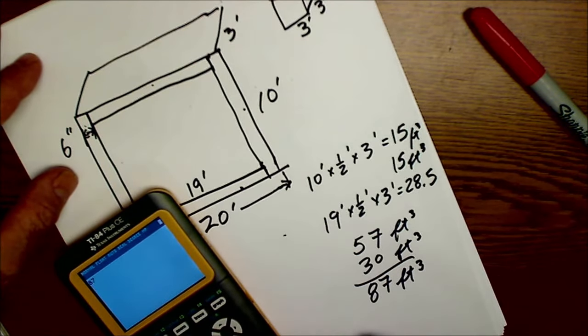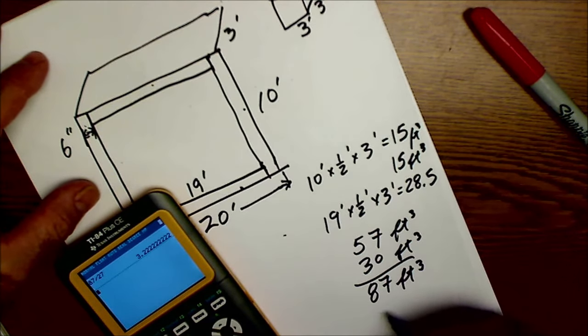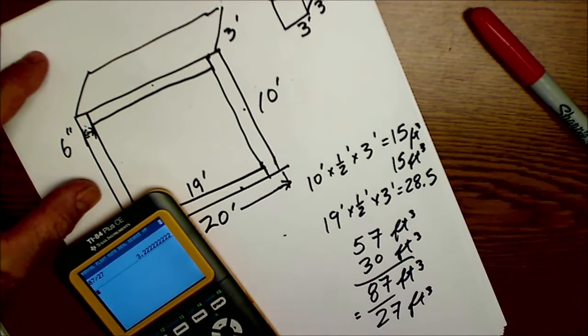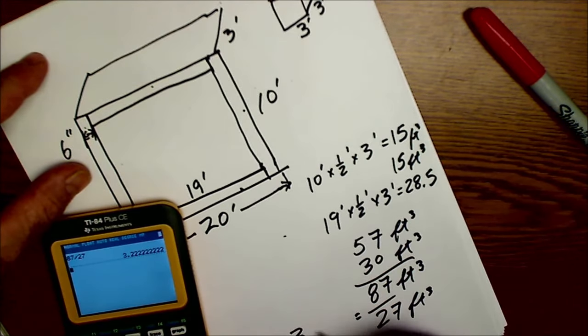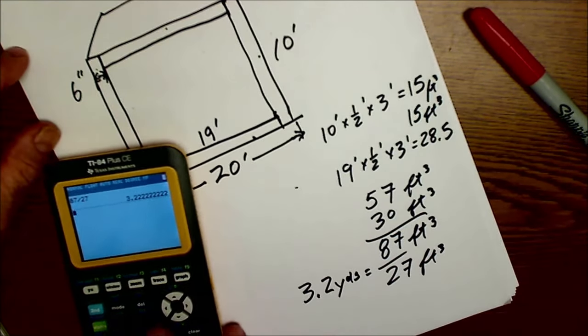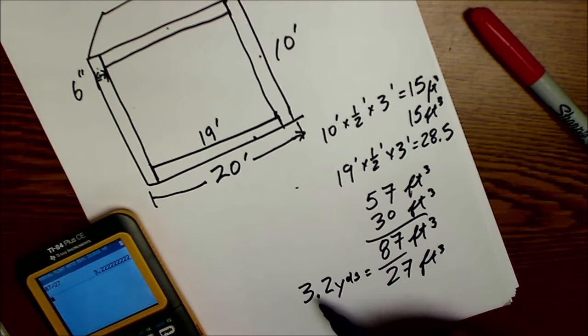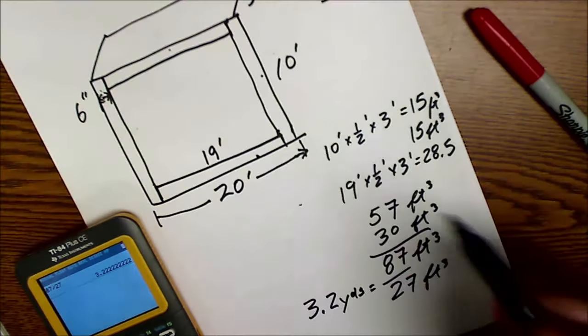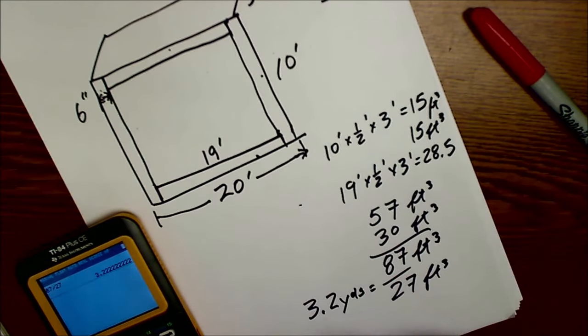So I add those together, I get 87 cubic feet of concrete that I need for this footing. I'll take that 87 cubic feet, divide it by 27, and get 3.22 yards. With concrete, I would probably order three and a half yards for that footing. Always better to have too much than not enough, especially on a footing like that, so I just round that up to three and a half yards.